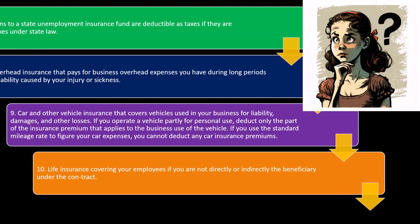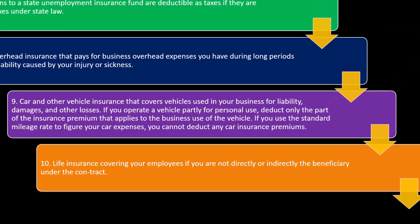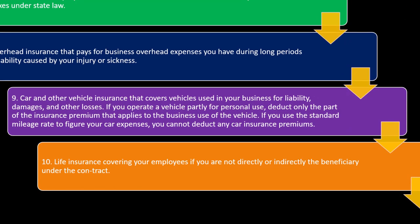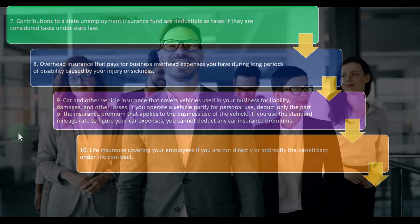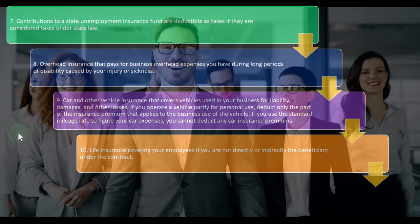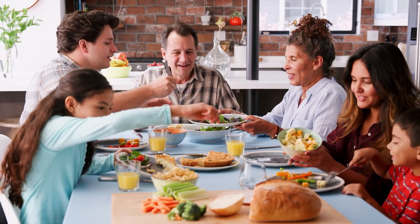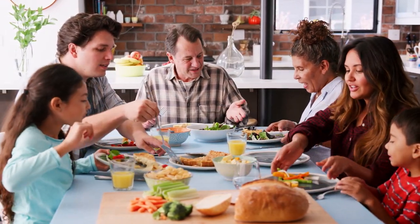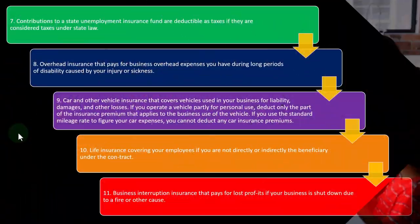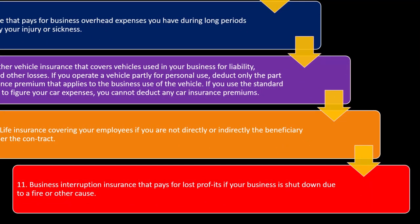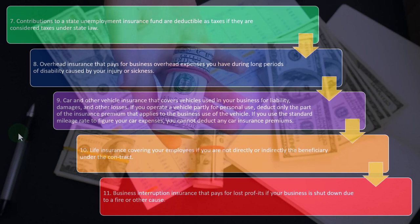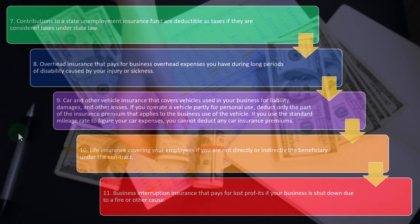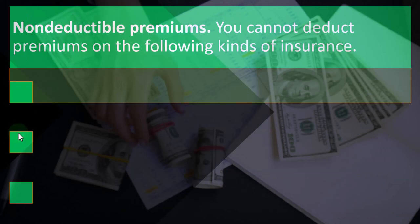Number ten is life insurance covering your employees, if you are not directly or indirectly the beneficiary under the contract. You might provide life insurance for employees; the beneficiary would typically be the employee's family, not yourself. Number eleven is business interruption insurance that pays for lost profits if your business is shut down due to a fire or other cause. You might buy this insurance so that if there's a break in income, it would get you through that gap. Since it's business insurance, you'd consider it ordinary and necessary.